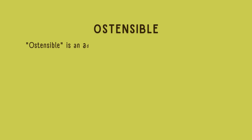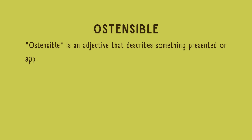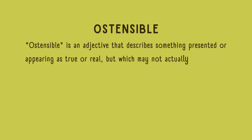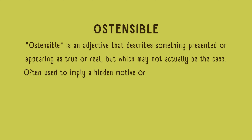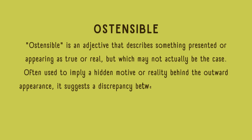Ostensible is an adjective that describes something presented or appearing as true or real, but which may not actually be the case. Often used to imply a hidden motive or reality behind the outward appearance, it suggests a discrepancy between what is shown and what is real.